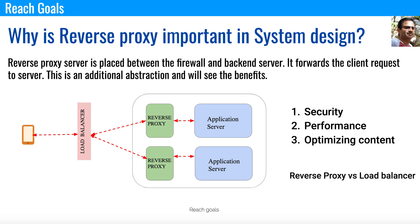Now let's talk about the difference between the reverse proxy and the load balancer. The reverse proxy accepts requests from the client, forwards them to a server that can fulfill the request, and returns the server response back to the client. The load balancer does a similar operation but with a key difference: it comes into the picture when there are millions of client requests, distributing traffic across multiple reverse proxy servers or application servers. The load balancer is primarily used to distribute traffic to improve performance, whereas the reverse proxy is used as a front face to take some of the responsibility off the application servers.